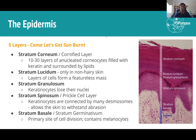Finally, the stratum basale (also called stratum germinativum) is where cells divide. This is where melanocytes and actively dividing keratinocytes are found. Everything above this layer is just living out its life — cells eventually lose their nucleus and flake off the skin.